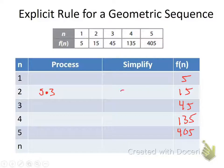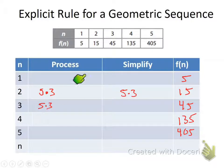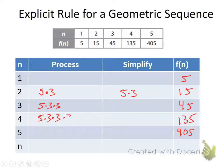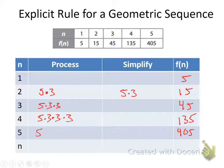Simplified, the second term is 5 times 3. For the third term (45), we took the previous term — 5 times 3 — and multiplied by an additional three, giving 5 times 3 times 3. For the fourth term (135), we took 5 times 3 times 3 and multiplied by another three. Each time we move to the next term, we multiply by three one additional time.